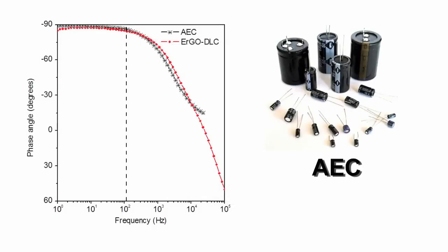This angle is comparable to that of commercial aluminum electrolytic capacitor. Thus, our graphene capacitor is capable to replace aluminum electrolytic capacitor for alternating current line filtering.